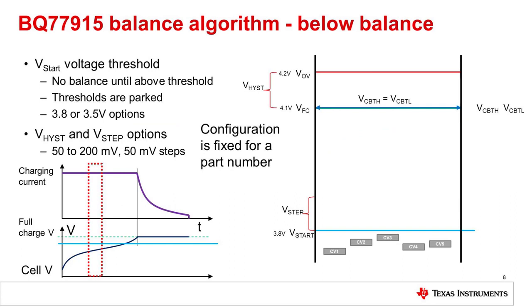The BQ77915 has multiple thresholds for balancing. To avoid balancing cells when voltage difference is large due to state of charge mismatch, the part has a V-start threshold below which balancing will not occur. It also has voltage hysteresis and step options, which will become apparent in later slides. Please note that the configuration options are factory programmed for a given part number and cannot be changed on the board.